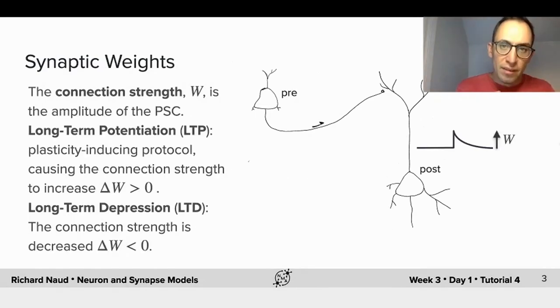To talk about plasticity, we need to talk about synaptic weights. A weight is a metric for the connection strength. When a presynaptic cell fires an action potential, it creates a postsynaptic current.